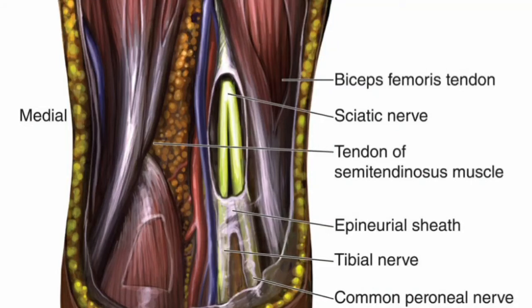The sciatic nerve block at the popliteal fossa is one of the most commonly used techniques in regional anaesthesia practice. Some common indications include corrective foot surgery, foot debridement, short saphenous vein stripping, repair of the Achilles tendon, and others.